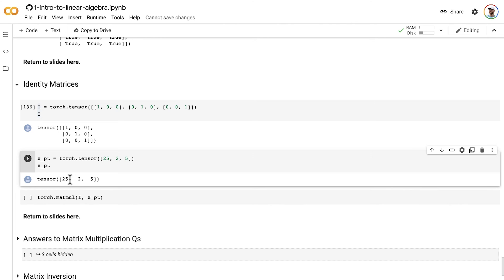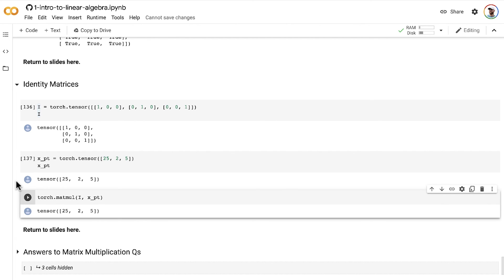Let's use this one with the elements 25, 2, and 5. If we perform matrix multiplication of that identity matrix by the vector, we output exactly the same vector as went in. So this is the special property of identity matrices.